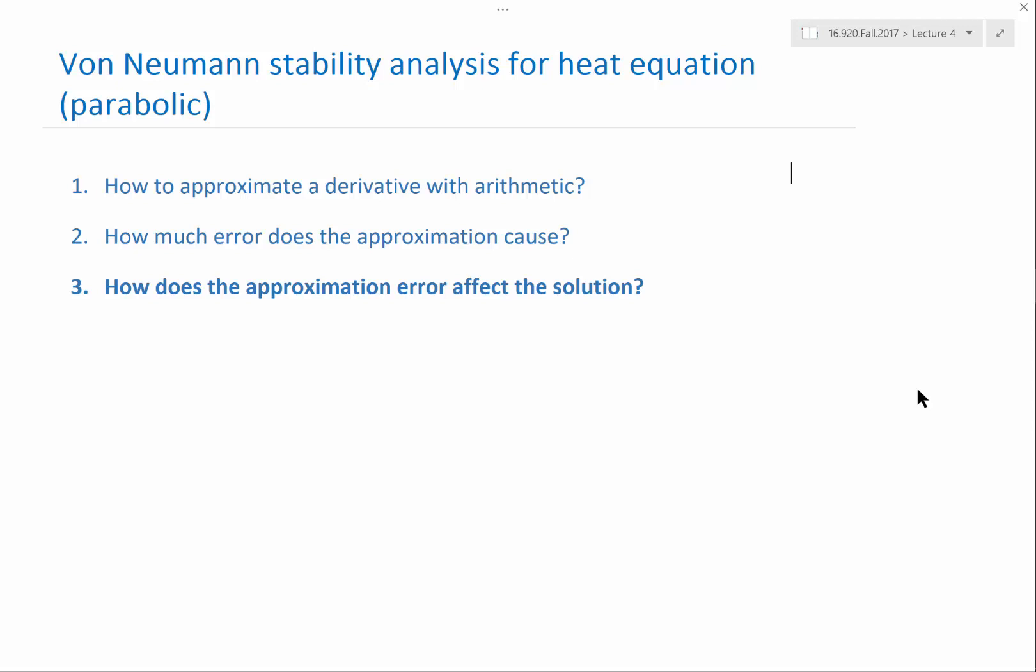So every time there is new error added in each time step, but the previous error is going to decay exponentially if the scheme is stable. If a scheme is unstable, the error added in previous time steps is going to exponentially amplify. Therefore, our whole solution may become like 10 to the 50, as we saw on the screen last time.